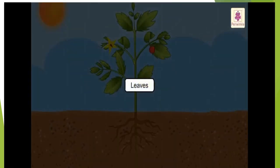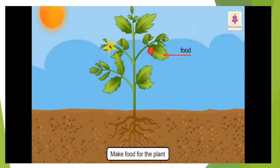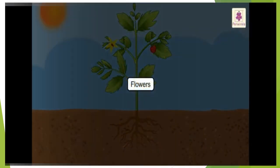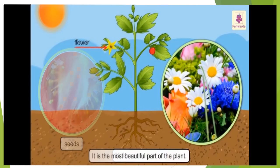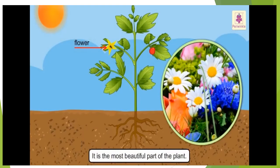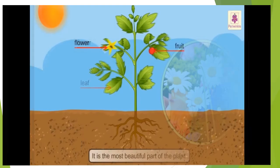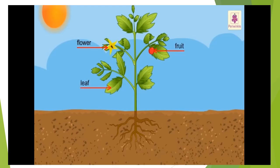Leaves — leaves make food for the plant. Flowers — flowers make seeds or fruits. The flower is the most beautiful part of the plant. Flower, leaf, and fruit all grow on the stem.